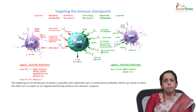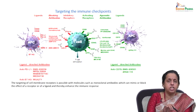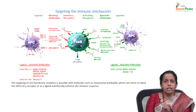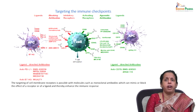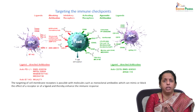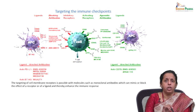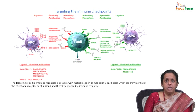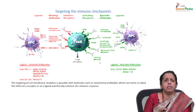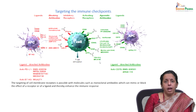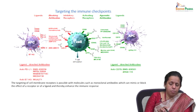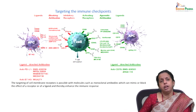T cell activation is further regulated by the balance of inhibitory checkpoint and co-stimulatory factors, which are critical in healthy subjects to prevent autoimmunity and protect normal tissues. Many immune checkpoints and co-stimulatory molecules on APCs and their receptors have been identified, and monoclonal antibodies that block any of these can improve the immune response.